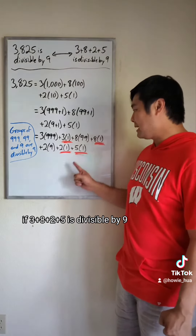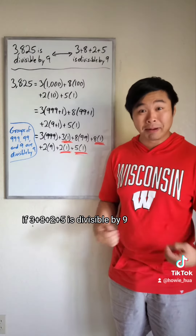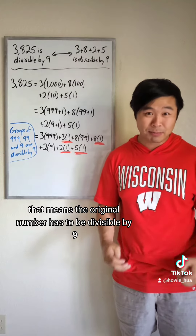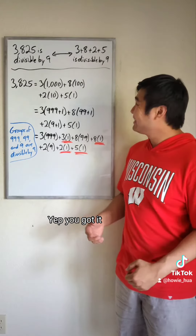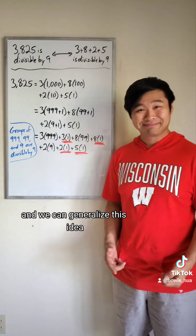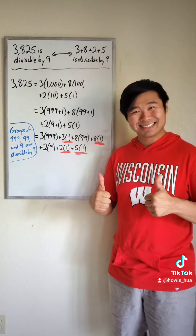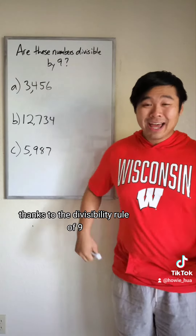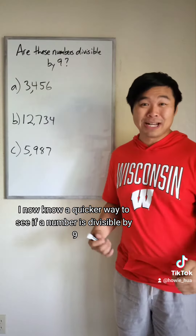If 3 plus 8 plus 2 plus 5 is divisible by 9, that means the original number has to be divisible by 9. You got it, and we can generalize this idea. Thanks to the divisibility rule of 9, I now know a quicker way to see if a number is divisible by 9.